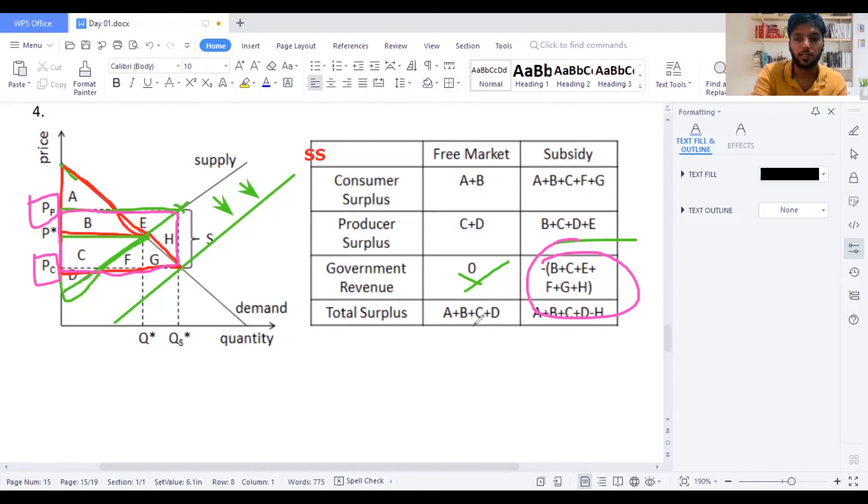What is the total surplus actually? When it comes to here, A plus B plus C plus D. And then after taking the government's thing, if you deduct, you will take A, B, C, D. So A plus B plus C plus D minus H. This area should be deducted from your area earlier it was. So this is not that mandatory for your exams. What you need to see is the consumer surplus, producer surplus and government revenue.